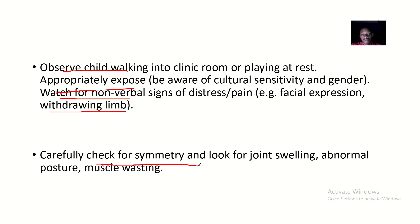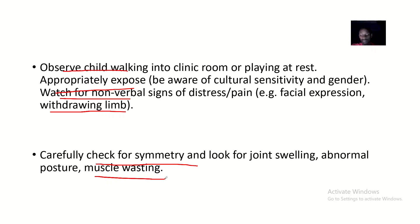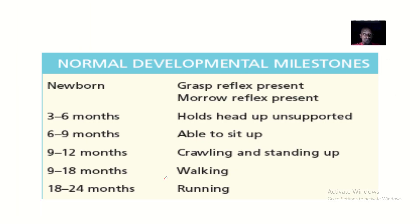Carefully check for symmetry, joint swelling, abnormal posture, and muscle wasting. Symmetry means checking whether the body is in alignment or if some parts are swollen. Joint swelling indicates whether there is inflammation. Abnormal posture includes signs of limping while walking. Muscle wasting is assessed by comparing one side of the body to the other — if the difference is too large, that indicates muscle wasting.